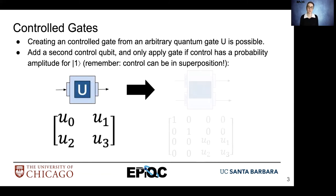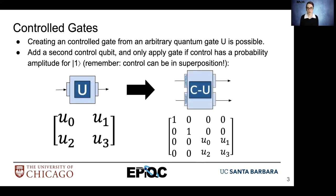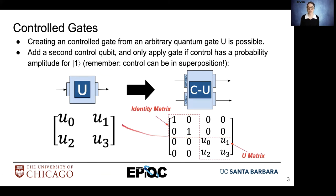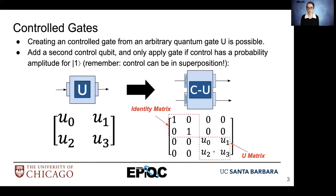Here we have our gate U, and this will become a controlled version of the gate, so we'll call it controlled-U. We can see once again we have an identity matrix appearing in the top left quadrant and then the U matrix in the bottom right quadrant of the controlled-U gate matrix. You can take any single qubit operation and turn it into a controlled operator that uses two qubits.